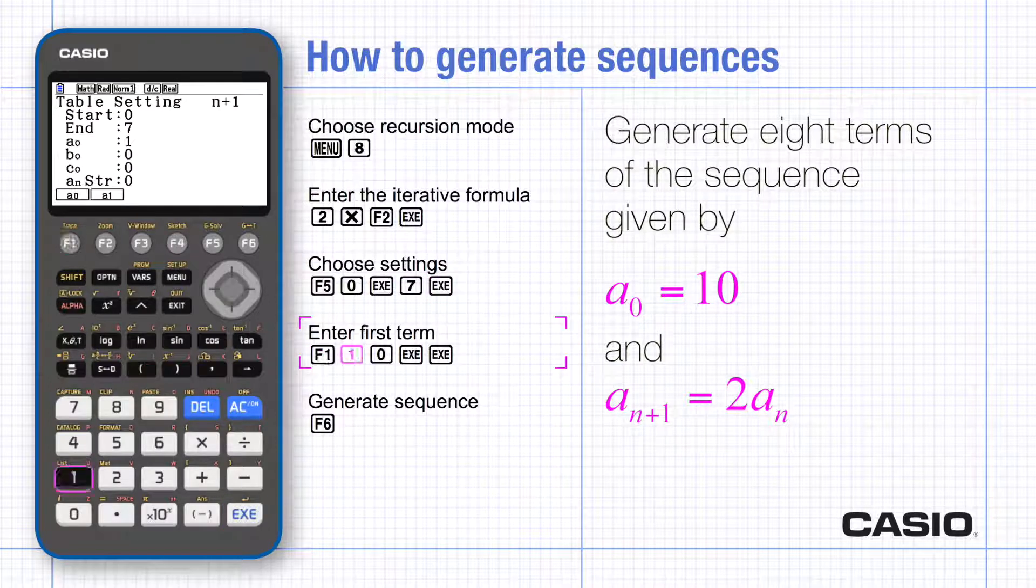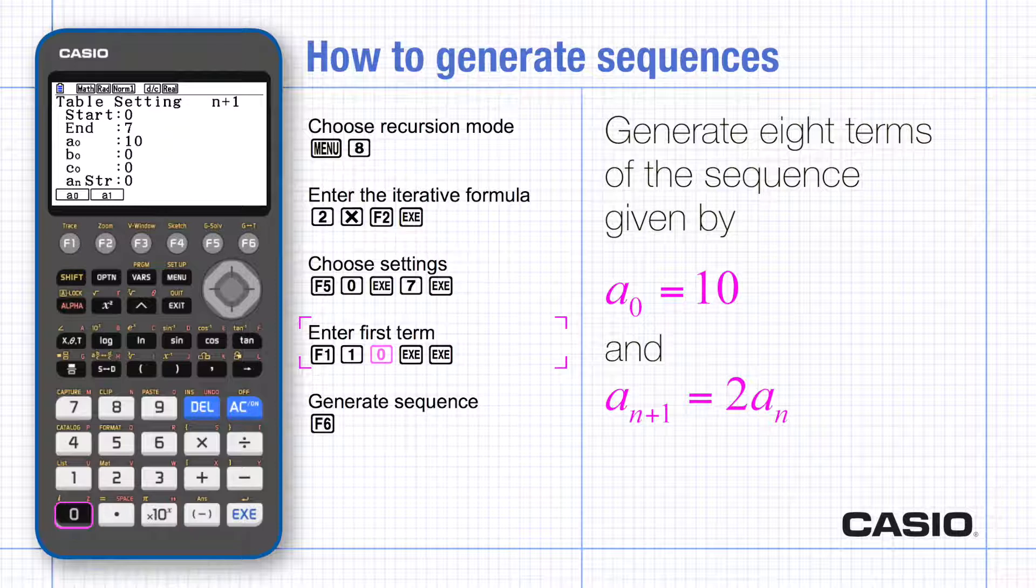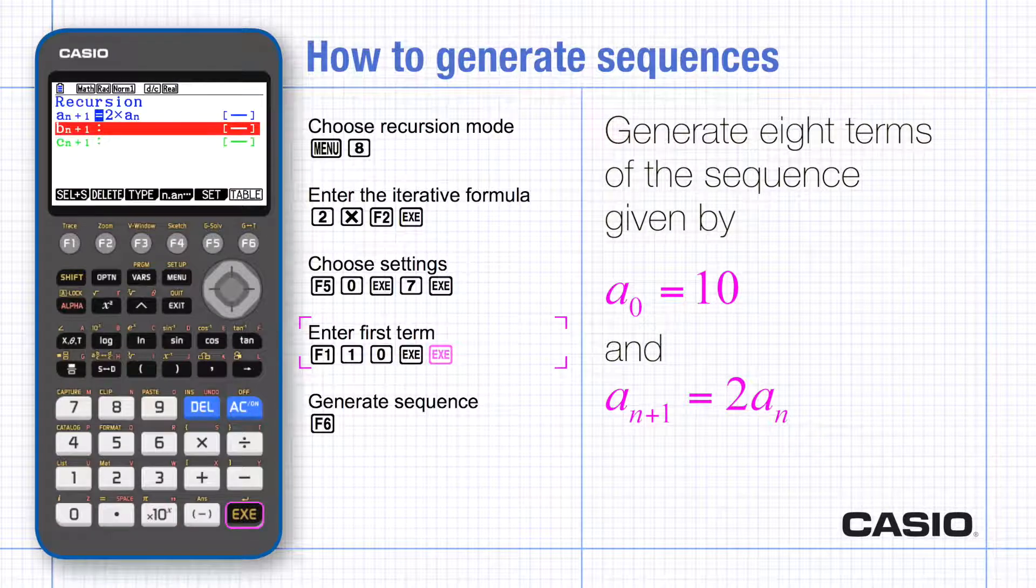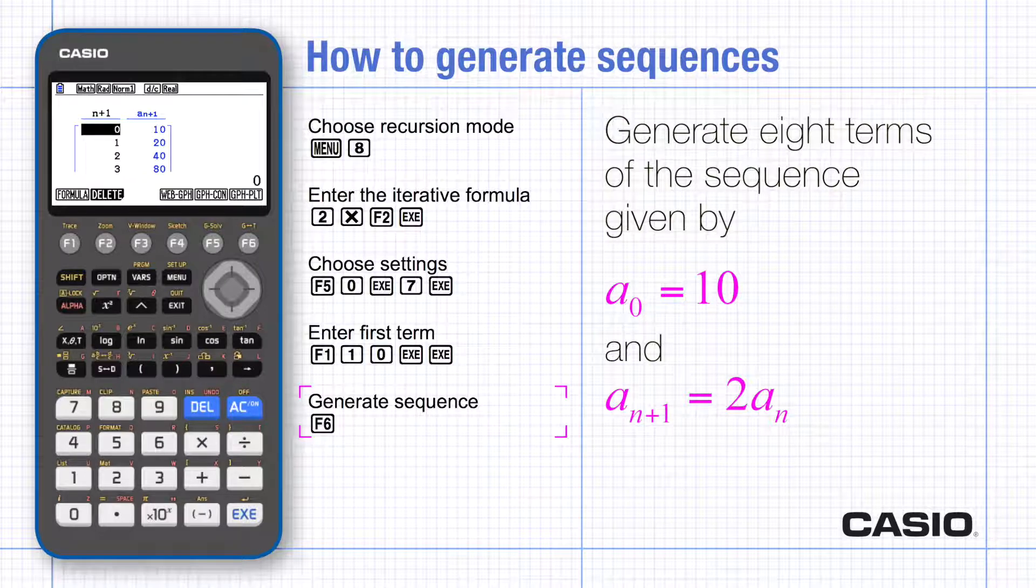Choose a naught for the first term and enter 10, then execute. Go to the table for the list of values. Notice that up to 3 sequences can be shown side by side.